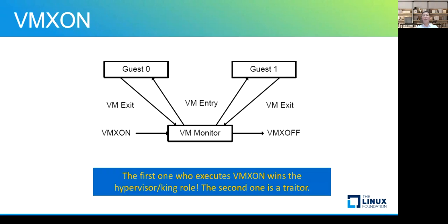The vmx-on instruction has a very special role in VT technology. The software which executes vmx-on first will win the hypervisor role. After that, if other software executes the instruction, it will fail and it will be treated with a trap. With this diagram, it shows the CPU's execution route in the VT environment. We will talk later in more detail.